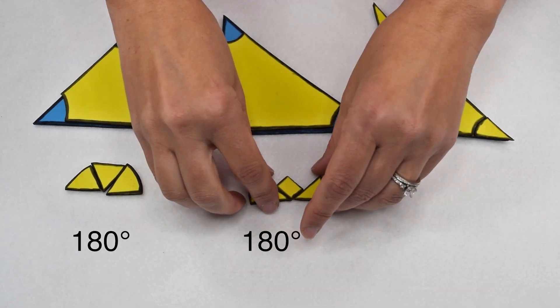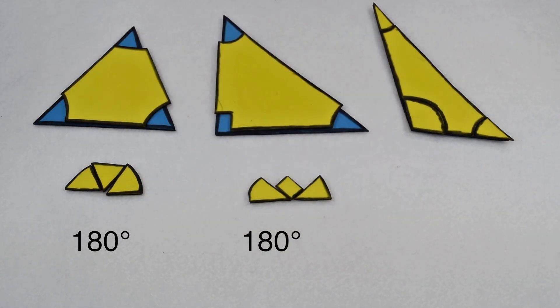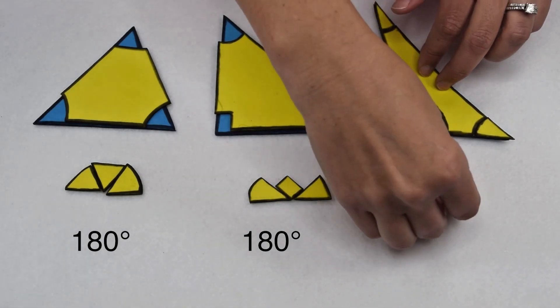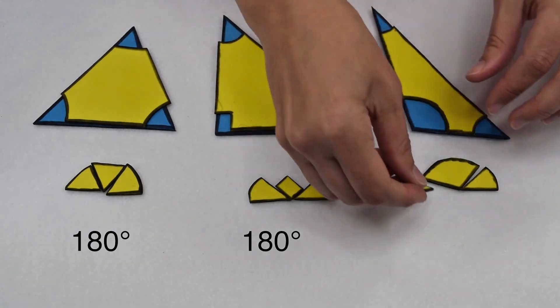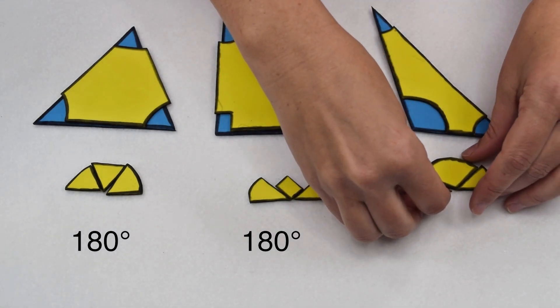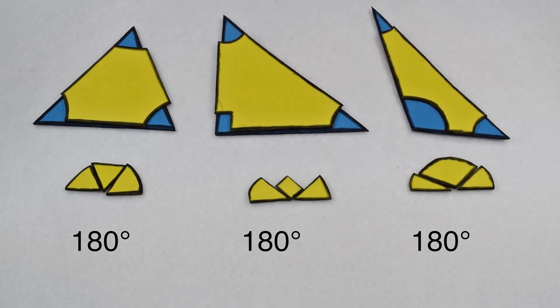We can see we can do that on the right angle triangle. We can put those together to make a straight line giving us an interior angle sum of 180 degrees. Now let's try it with the scalene triangle. If we cut off its vertices and arrange them, we see that they also go together to form a straight line. That means all triangles are going to have an interior angle sum of 180 degrees regardless if they're regular or irregular.